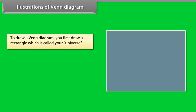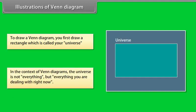Illustrations of Venn Diagram. To draw a Venn Diagram, you first draw a rectangle which is called your universe. In the context of Venn Diagrams, the universe is not everything, but everything you are dealing with right now.